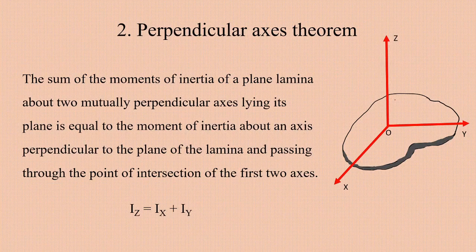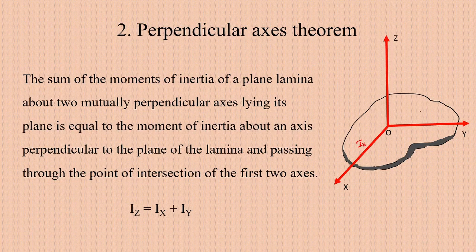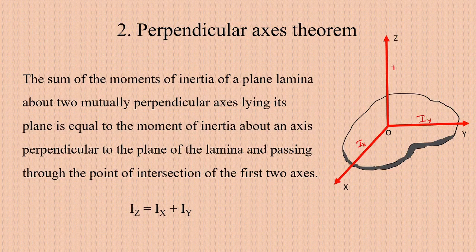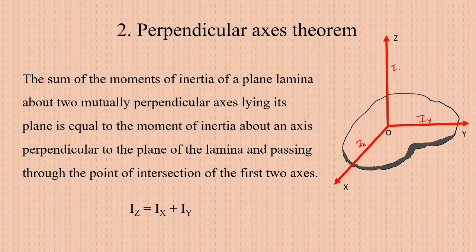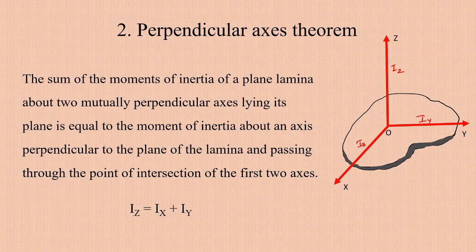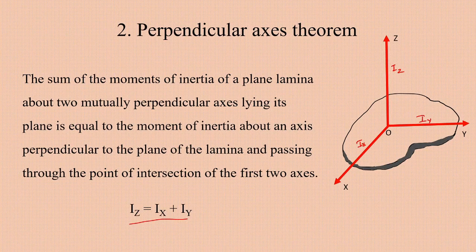We can express the sum of the moments of inertia about the two perpendicular axes in the plane of the lamina — that is Ix and Iy — as equal to the moment of inertia about the axis perpendicular to the plane lamina and passing through the point of intersection, that is Iz. So: Iz = Ix + Iy. That is the perpendicular axis theorem.